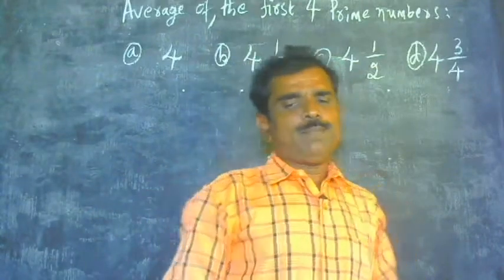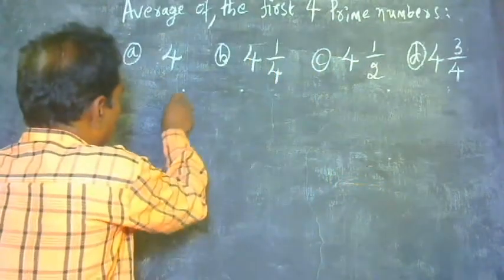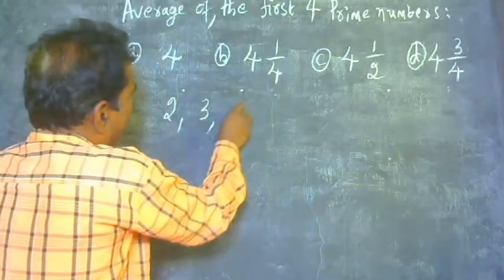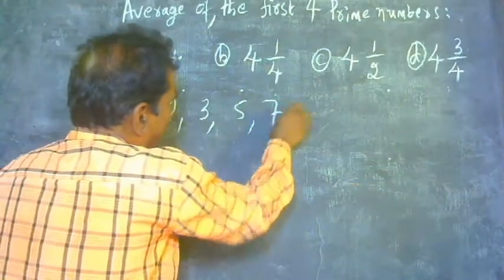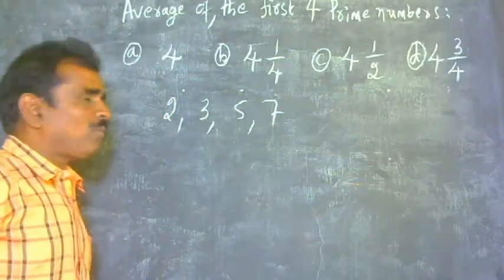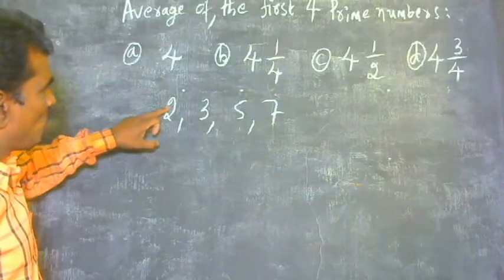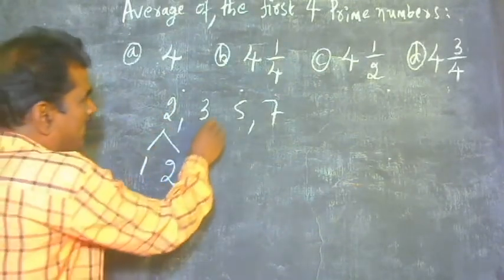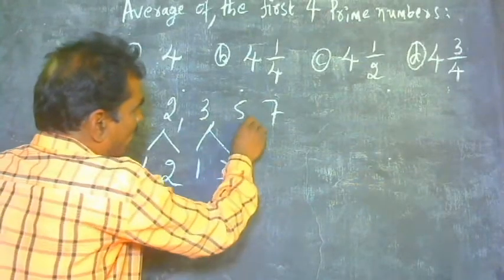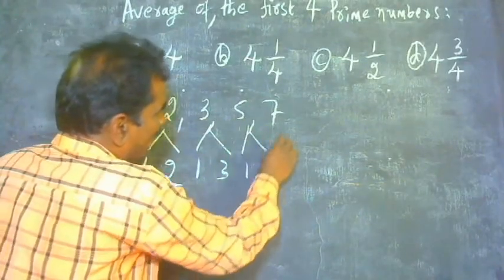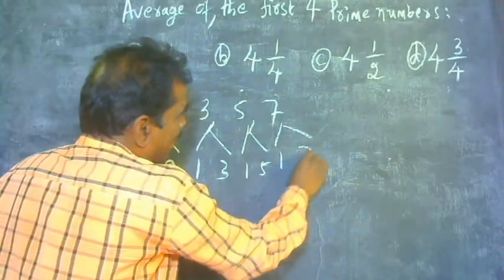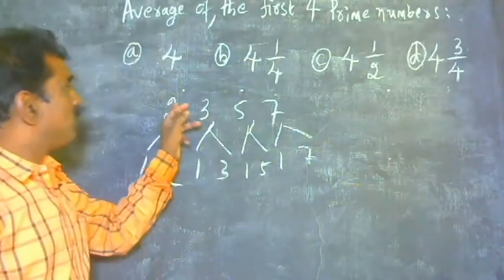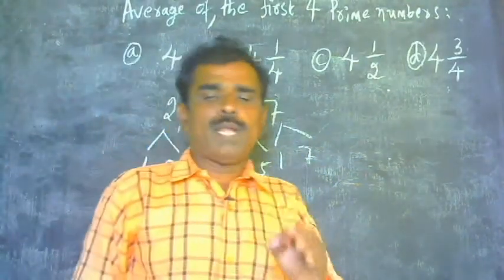So, these are the first 4 prime numbers. You see, 2, 3, 5, 7 are the first 4 prime numbers because 2 is divisible by 1 and 2 only, 3 is divisible by 1 and 3 only, 5 is divisible by 1 and 5 only, 7 is divisible by 1 and 7. That is why these 4 are the first 4 prime numbers.